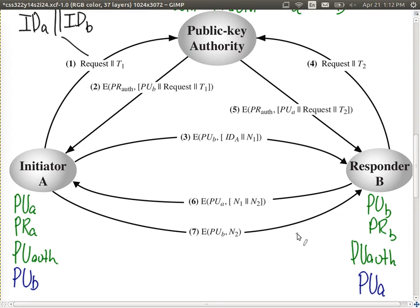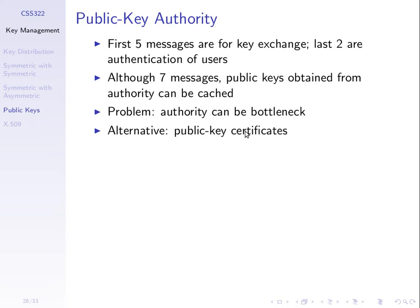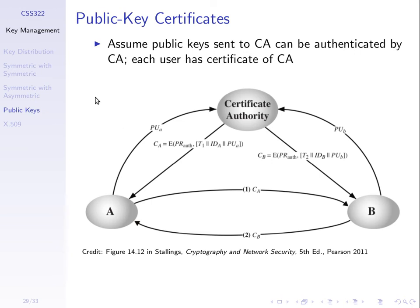The next approach tries to do the same thing — exchange public keys between A and B — but improves performance by not always contacting the authority. This is referred to as public key certificates, using a certificate authority or CA. Instead of contacting the authority whenever we want someone else's public key, the authority issues a certificate to every user. Those certificates are sufficient to exchange directly between A and B — we don't need to contact the authority each time.